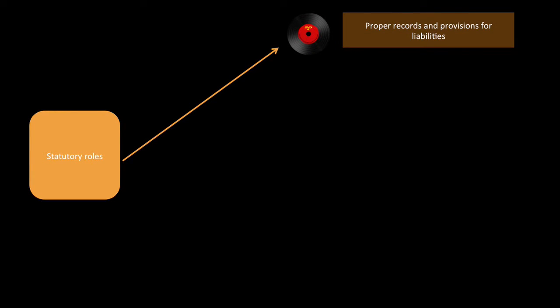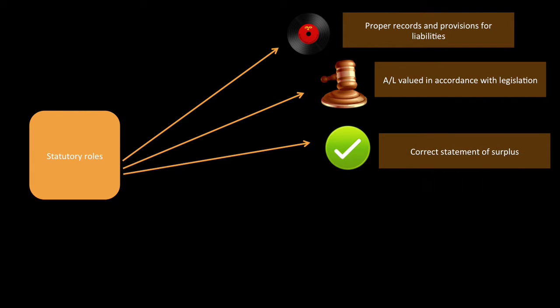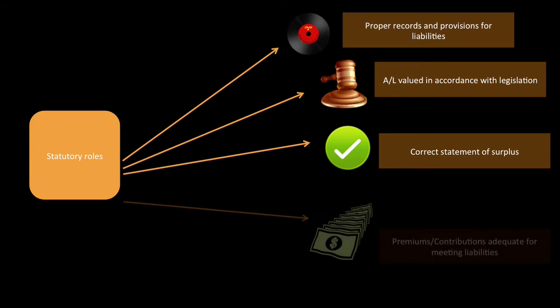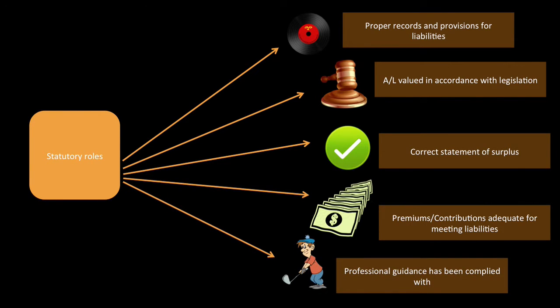There are some statutory roles. Actuaries are usually required to certify that, for the valuation of liabilities, proper records have been kept and proper provisions for the liabilities have been made. That the liabilities have been valued in the context of assets, and both liabilities and assets have been valued in accordance with legislation. That a correct statement of surplus has been produced. That, in his or her view, premiums or contributions are adequate given reasonable assumptions and the level of free assets to meet future liabilities. And, finally, that professional guidance has been complied with.